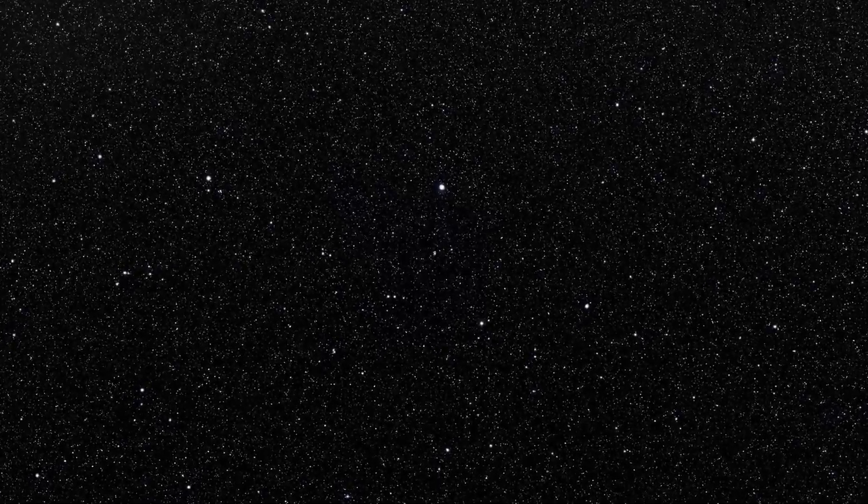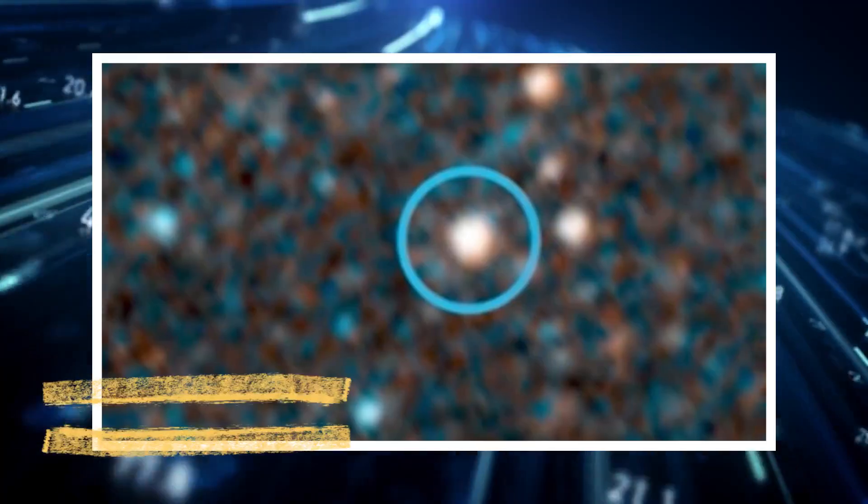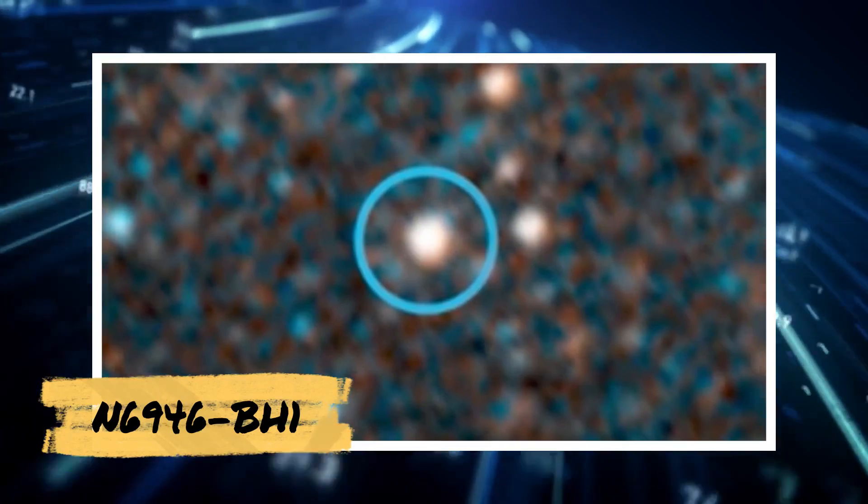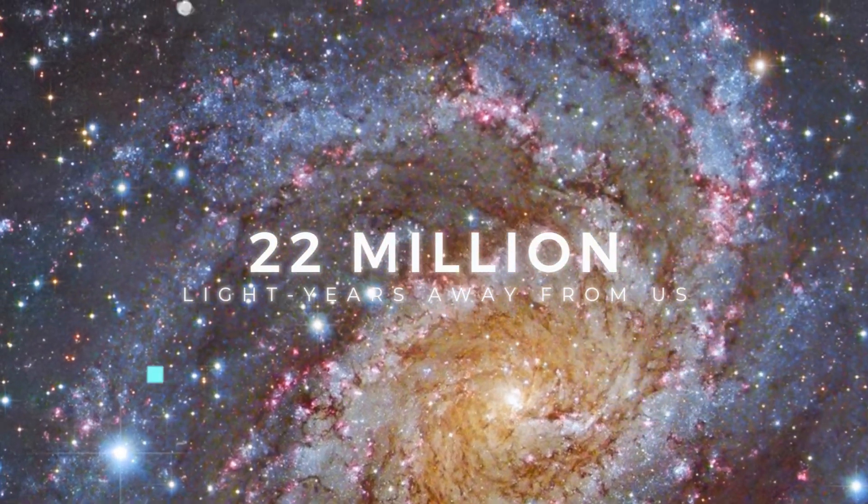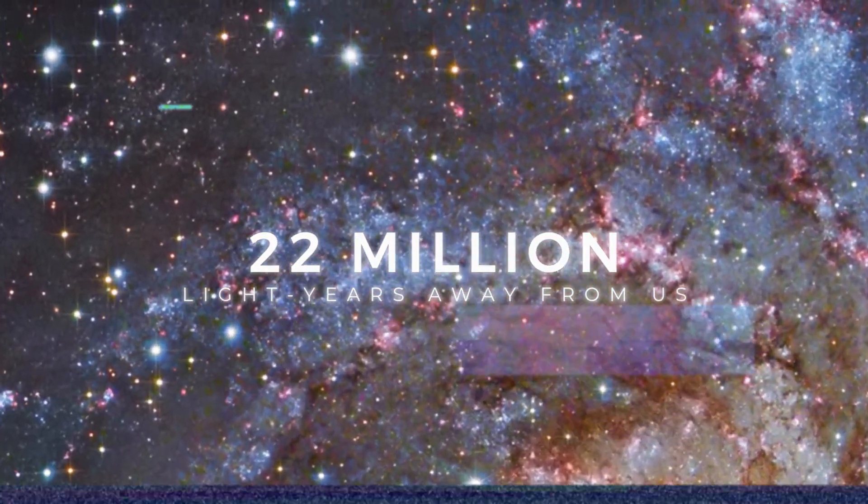This enigmatic event has left astronomers scratching their heads for years. Known as N6946BH1, this red supergiant took its place in a swirling galaxy, roughly 22 million light-years away from us.